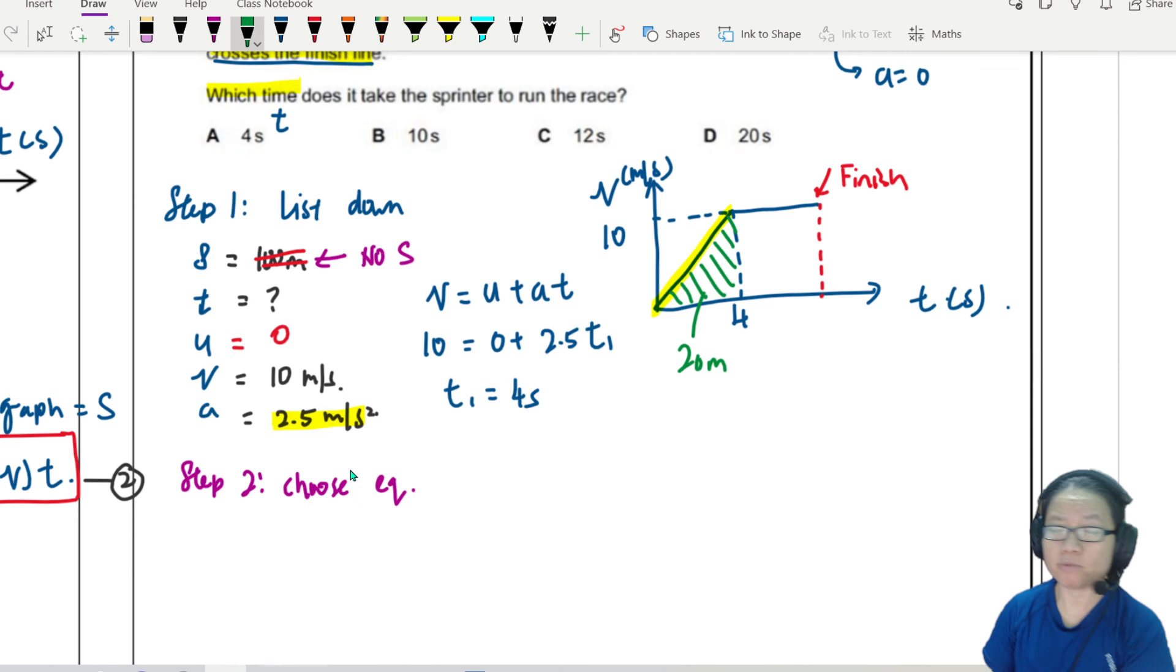So let's say, for example, you don't want to draw a graph at all. Then you won't be able to tell or be able to see that, oh, actually, you know, 2.5 meter per second squared is not going to carry on forever.